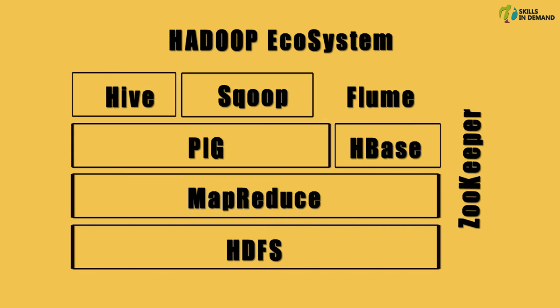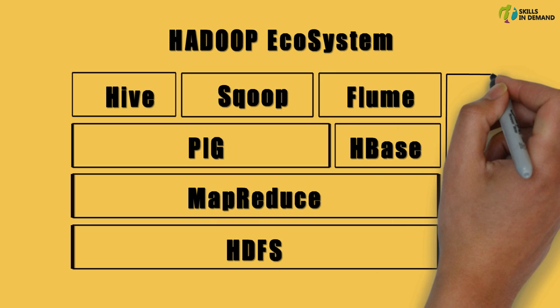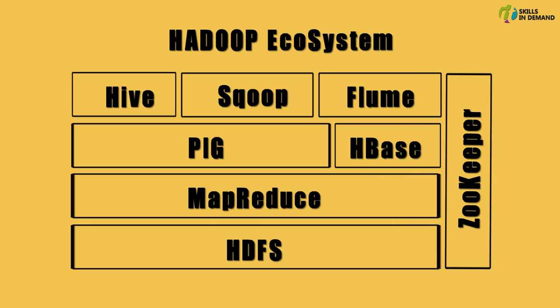Apache Sqoop is an application used to transfer data to and from Hadoop to any relational database management system. Apache Flume is an application that allows moving streaming data into the Hadoop cluster — a good example of streaming data would be the data being written to log files. Finally, Zookeeper takes care of all the coordination required among these softwares to function properly.